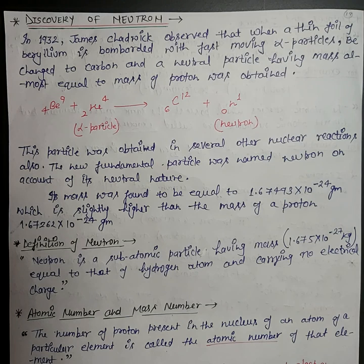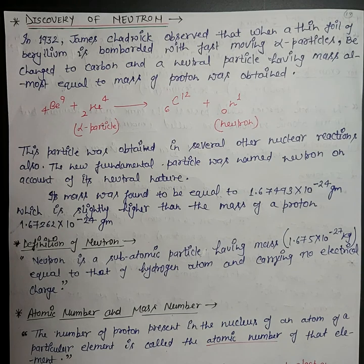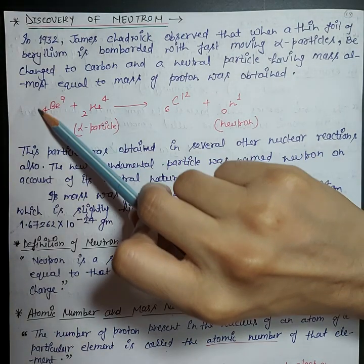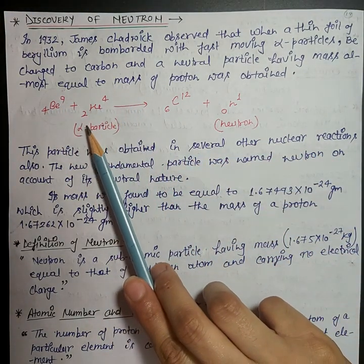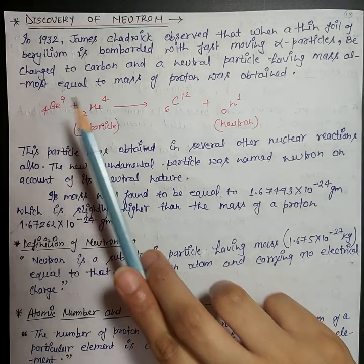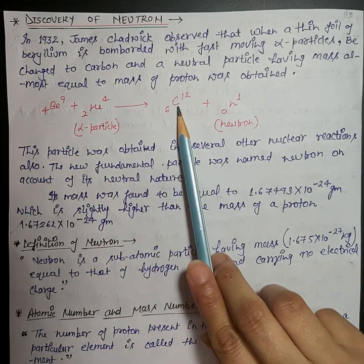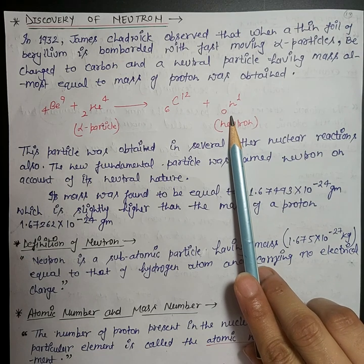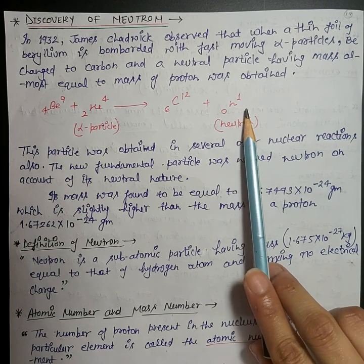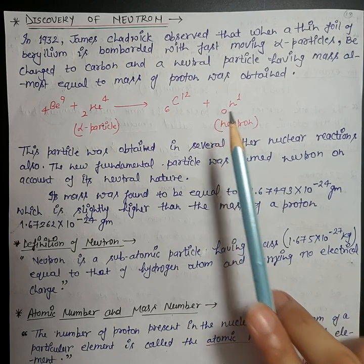To solve this problem, it was thought that there must be a third particle in the atom which has to be neutral, as the positive charge of the proton is already balanced by electron, and has weight almost equal to the proton. In 1932, scientist James Chadwick, while performing an experiment, found that when a thin foil of beryllium is bombarded with fast moving alpha particles, beryllium becomes carbon and a neutral particle with mass almost equal to the proton is obtained.